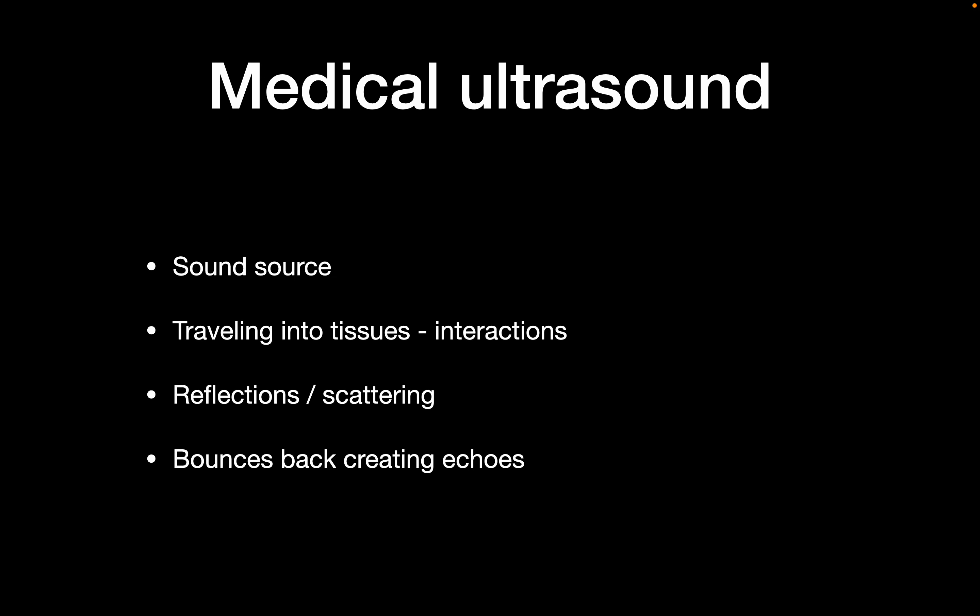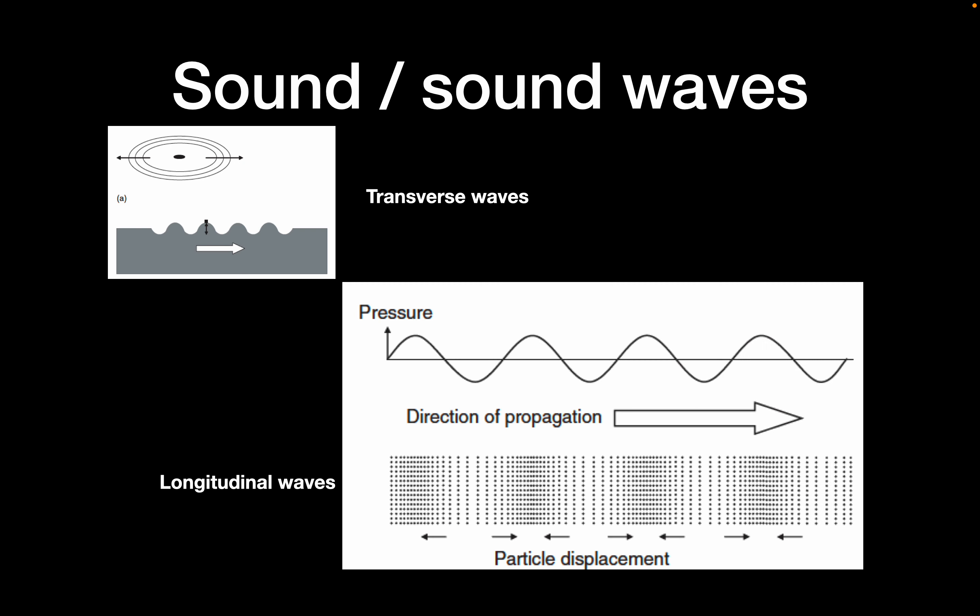Let's start with the very basics of sound and medical ultrasound. For any sound, you need a sound source — you pluck a cord or use a drum, it resonates, and that oscillation is transmitted through air particles to our ears. In medical ultrasound, the sound source is the ultrasound machine, which creates ultrasound that travels into tissues, interacts with them, generates echoes that bounce back, and the machine creates an image from those echoes. That's the basis of ultrasound image formation.